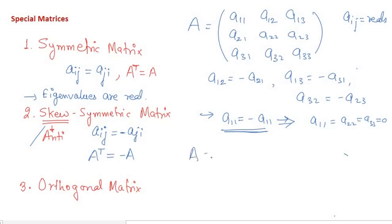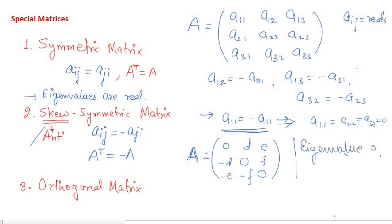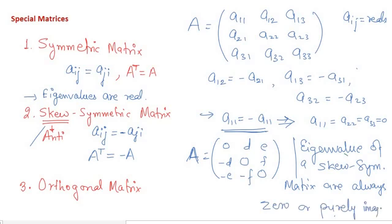If we reconstruct an anti-symmetric matrix, the diagonal elements are all zero. With off-diagonal entries d, e, f in the upper triangle, the lower triangle entries are −d, −e, −f respectively. The eigenvalues of a skew-symmetric matrix are either zero or purely imaginary — they cannot be real.